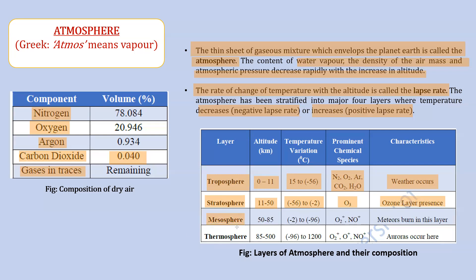Mesosphere extends from 50 to 85 kilometers. Here the temperature again decreases, from minus 2 to minus 96 degrees Celsius — a negative lapse rate. Stratosphere, in contrast, has a positive lapse rate because temperature increases from minus 56 to minus 2 degrees Celsius. In mesosphere, prominent species are oxygen cation and nitric oxide cation. The characteristic of this layer is that meteors burn here.